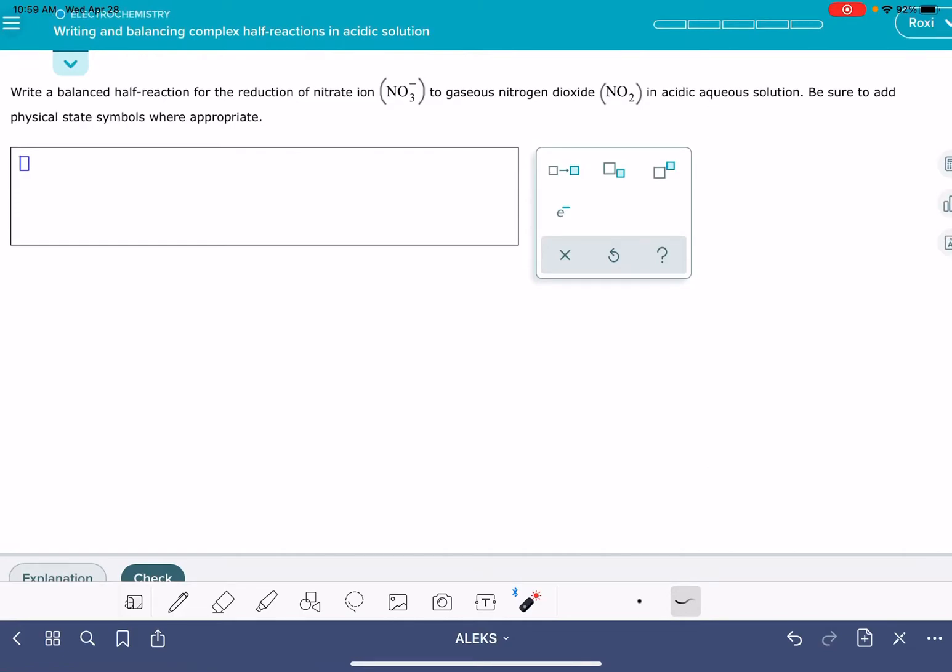In this video, I'm going to show you how to solve the Alex problem called writing and balancing complex half reactions in acidic solution. In this problem, it's going to give you the formula or possibly just the name of your reactant, NO3 minus, and then also your product, NO2, and we're doing this in acidic solution.